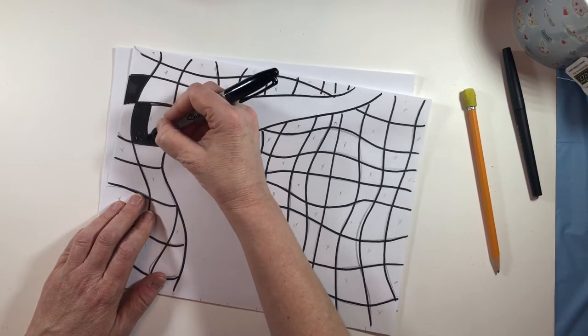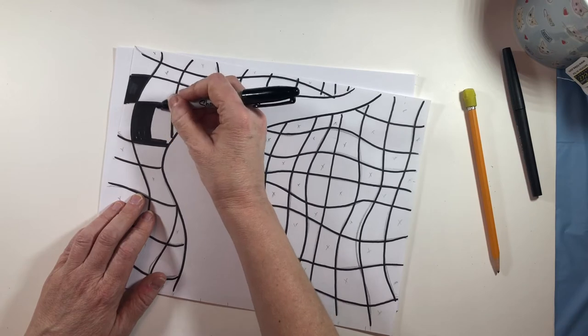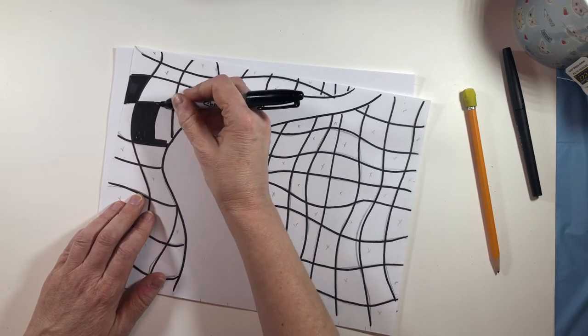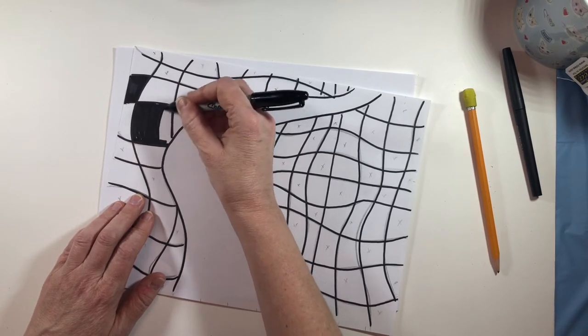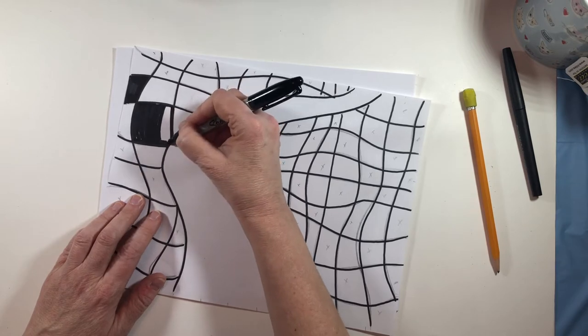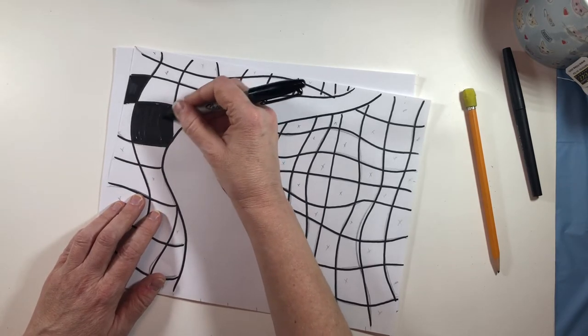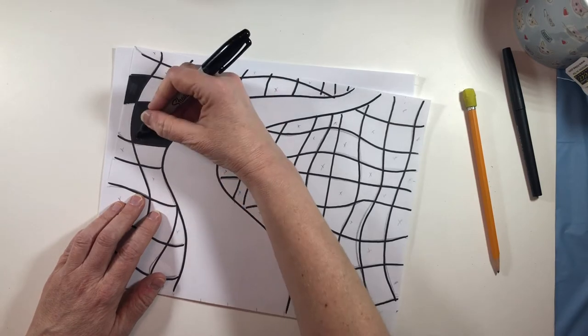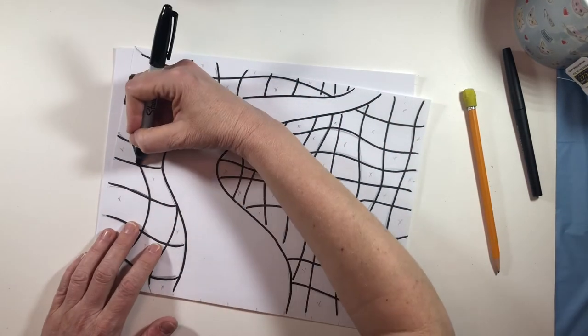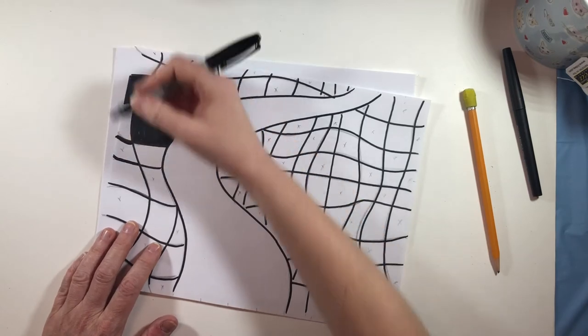So if I'm coloring in, it's kind of satisfying. Even the sound. So I'm only coloring the ones in that have the X's. If you want to color in the other ones and leave the X's so you can erase them, that's okay. Just pick one and stick with it.